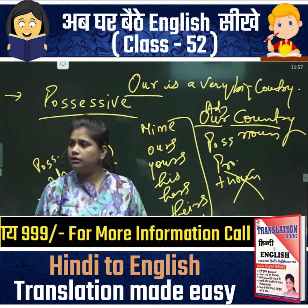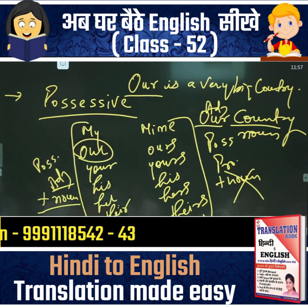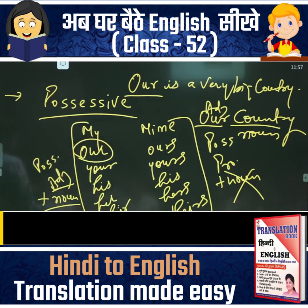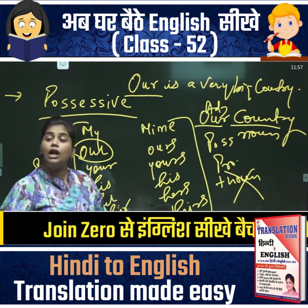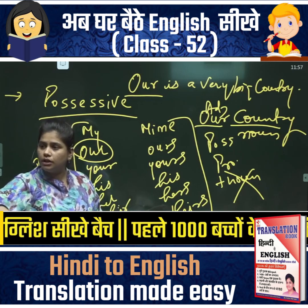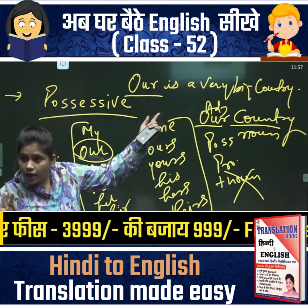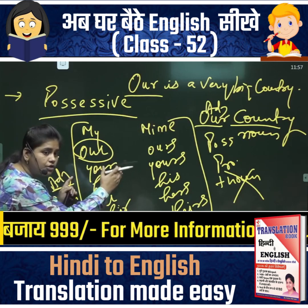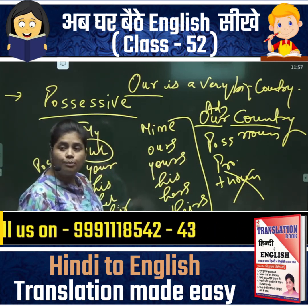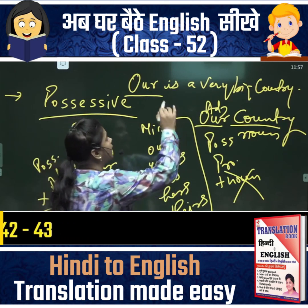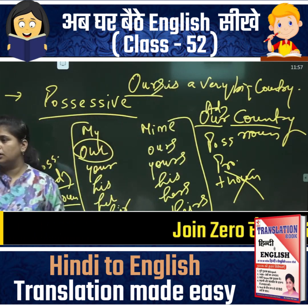Toh noun hona hi chahiye. Lekin agar shabd is doosri list ka hai, toh noun nahi hona chahiye. Yahan is sentence mein noun nahi hona chahiye — yani shabd yahan ka nahi, shabd doosri list ka hona chahiye. Toh 'R' ka possessive pronoun kya hai? Aise aayega paper mein, aur tumhe theek karna hai.